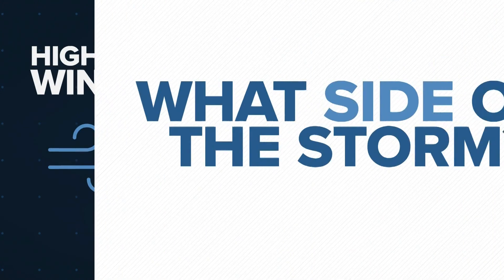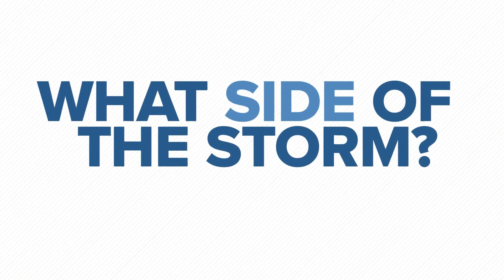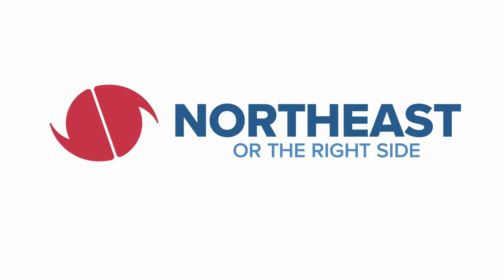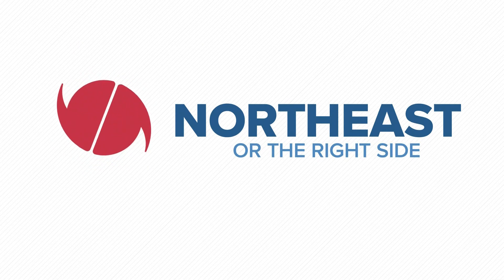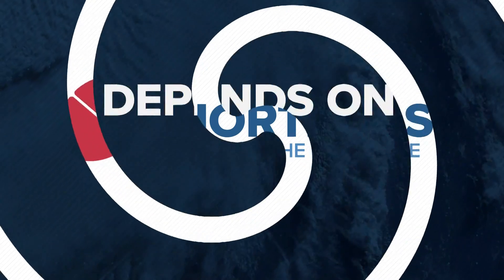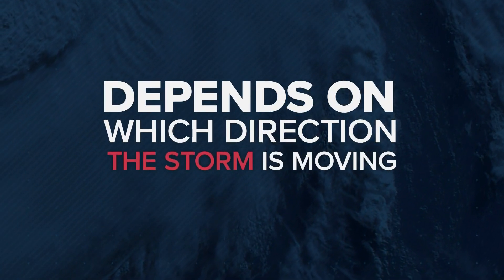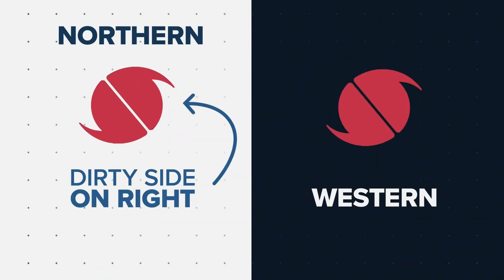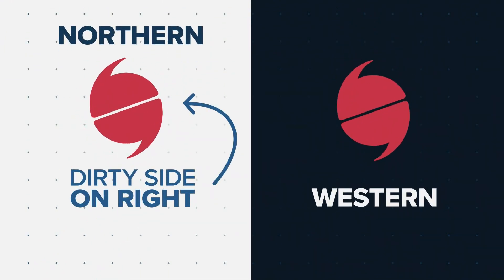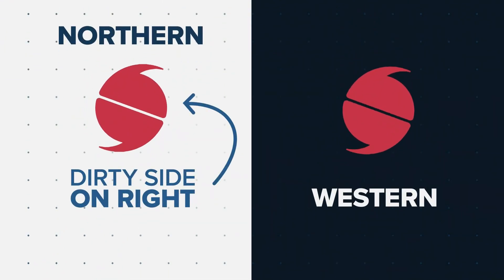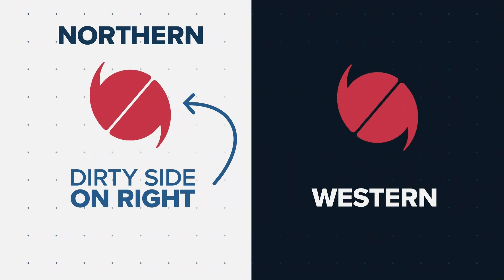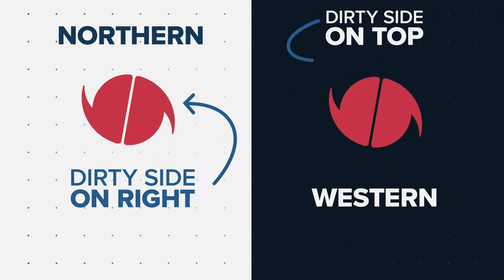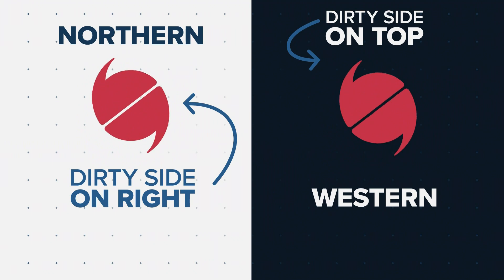So what side of the storm is that? Well, generally it's the northeast side of the storm, or more simply put, the right side of the storm — but it also depends on which direction the storm is moving. If it's traveling in a northern direction, the dirty side will be more on the direct right-hand or eastern side. If the storm is traveling in a more western direction, the dirty side will be more on top of it, or the northern side.